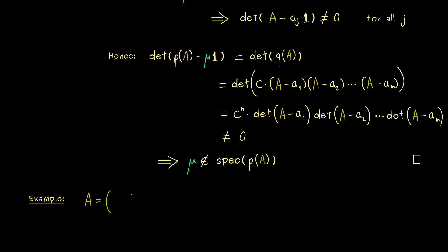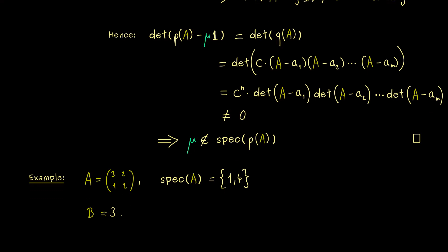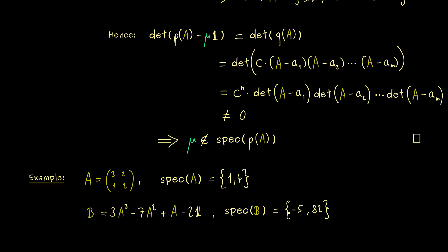We take a 2×2 matrix A = [[3,2],[1,2]], which has exactly two eigenvalues: 1 and 4. Now we look at another matrix B given as a polynomial of A: B = 3A³ − 7A² + A − 2I. The spectral mapping theorem tells us to just put 1 and 4 into this polynomial. The results are −5 and 82. So using the spectral mapping theorem, we immediately get the spectrum of B, and we will look at more applications of this theorem in future videos.